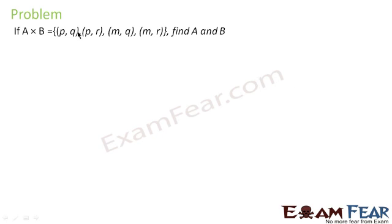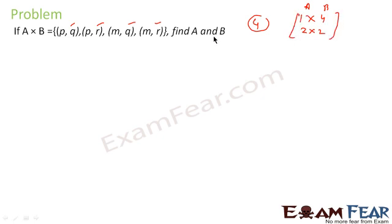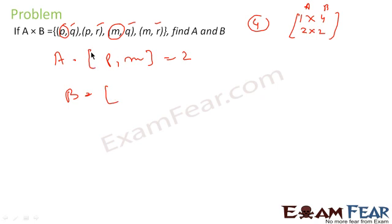Now we have an example where the Cartesian product A×B is given and we have to find sets A and B. The number of elements in A×B is 4, so either A has 1 element and B has 4, or both A and B have 2 elements each. The distinct first elements are P and M, so set A = {P, M} — two elements. The distinct second elements are Q and R, so set B = {Q, R} — also two elements. Since 2×2 = 4, this confirms our answer.